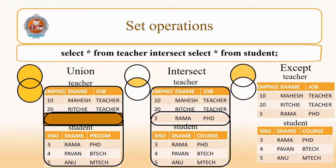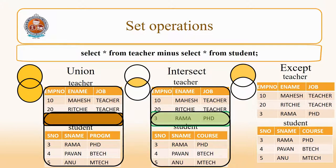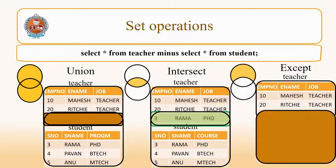Let us see the EXCEPT operator — that is, elements contained in one set but not in another set. In SQL there is the EXCEPT operator, but in Oracle you can also use MINUS. The query is: SELECT * FROM teacher EXCEPT (or MINUS) SELECT * FROM student. That will give you the teachers that are not students. The result will be 10 Mahesh teacher, 20 Ritchie teacher — those are all teachers but not students.